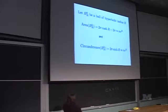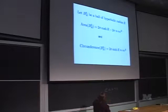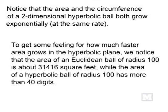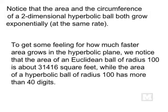These are the two facts we're going to use — you don't need to know anything else about hyperbolic space except these: the area grows exponentially, and most area is near the boundary. A Euclidean ball of radius 100 is about 30,000 square feet, roughly the size of this building. A hyperbolic ball of radius 100 has an area with 40 digits.